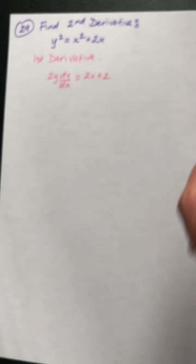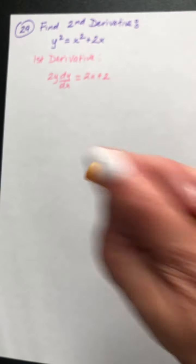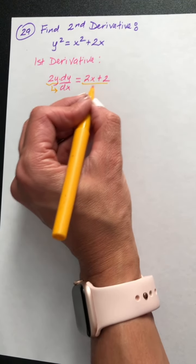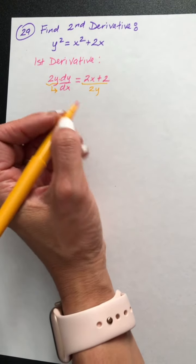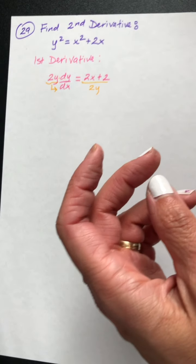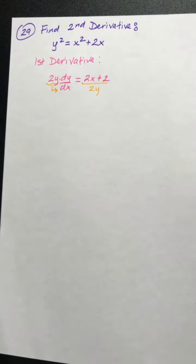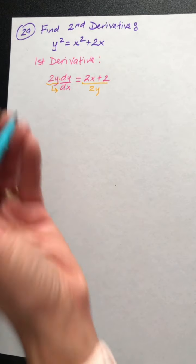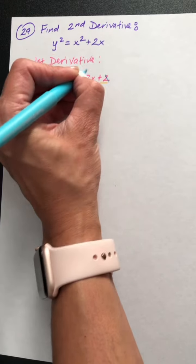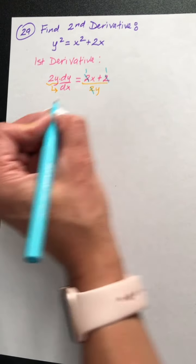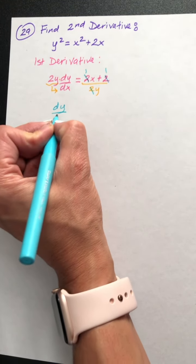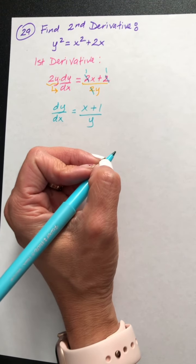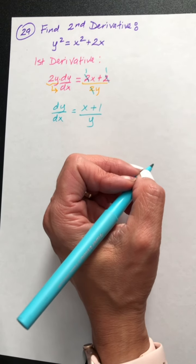Isolate the dy dx — we need to get rid of the 2y in front, since it's being multiplied together, so we divide by it. We get 2x plus 2 all over 2y. All three terms have a 2, so we reduce it out, and it becomes dy dx equals x plus 1 over y. This is the first derivative.